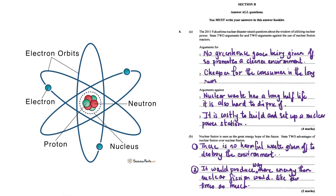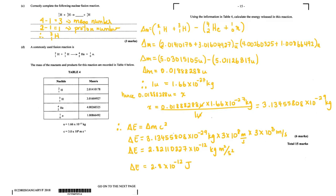Another advantage: with nuclear fusion it will produce way more energy than nuclear fission — about four times as much. Now, correctly complete the following nuclear fusion reaction. Whatever is on the left must add up to what is on the right. So if you add up these numbers on the left they come up to four.